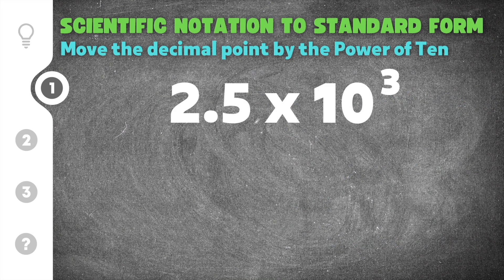Alright, let's go ahead and do some practice problems on converting scientific notation to standard form. Our first problem gives us 2.5 times 10 to the third power. We have our base here which is 2.5, and it is being multiplied times 10 to the power of 3.